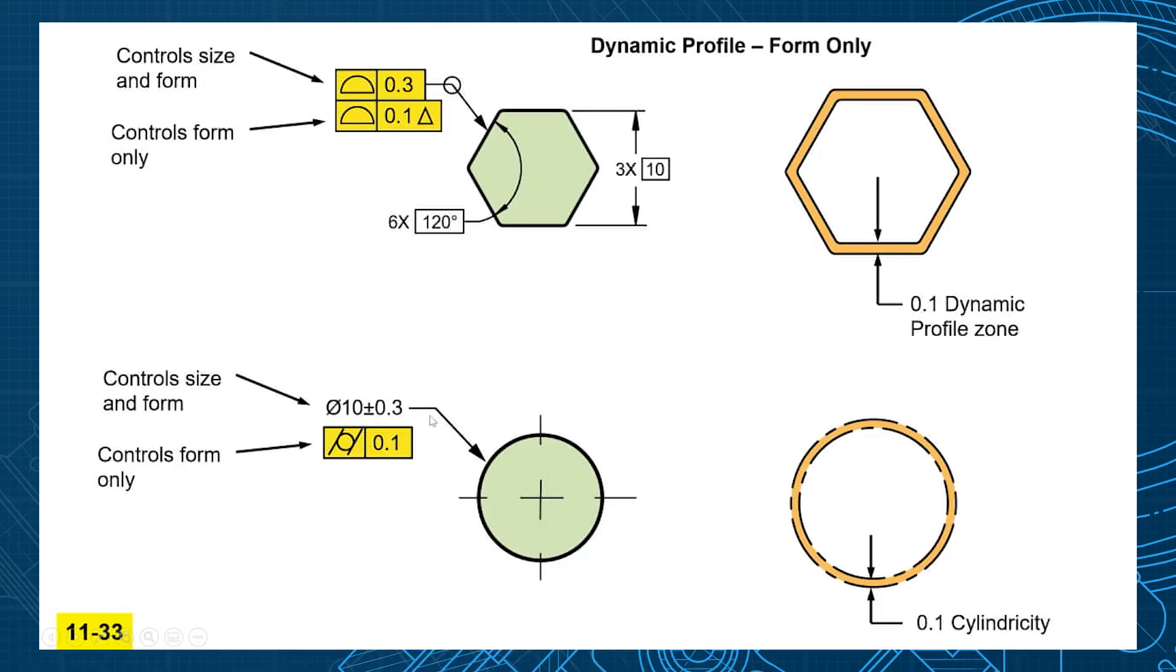Think of this as a very similar concept to what we did in unit 10 with a form tolerance, cylindricity. So what do we do on cylindricity? We give a bigger plus minus for the size. You can make a big one, you can make a small one, but it's got to be cylindrical within 0.1.